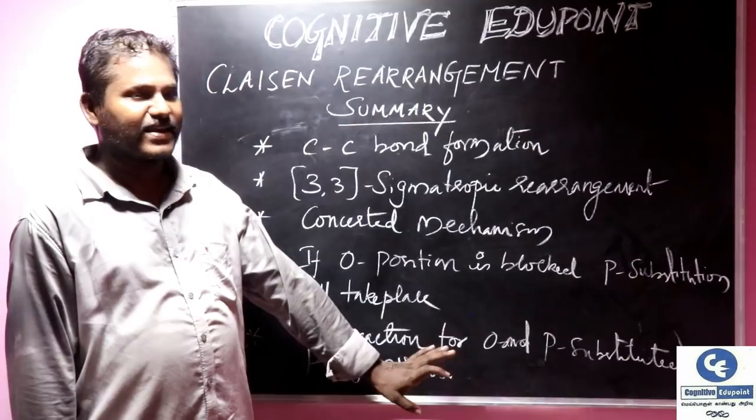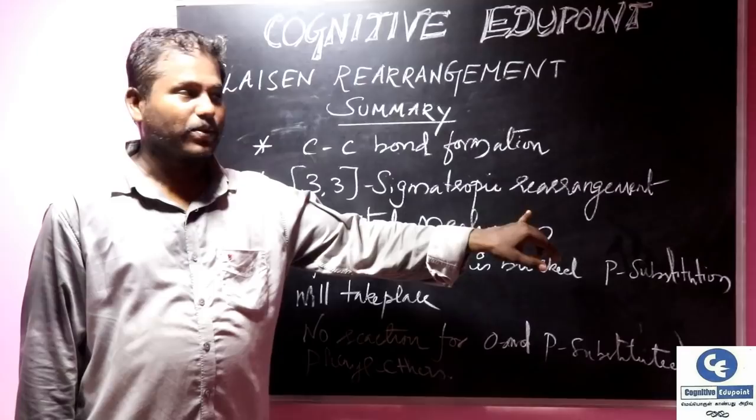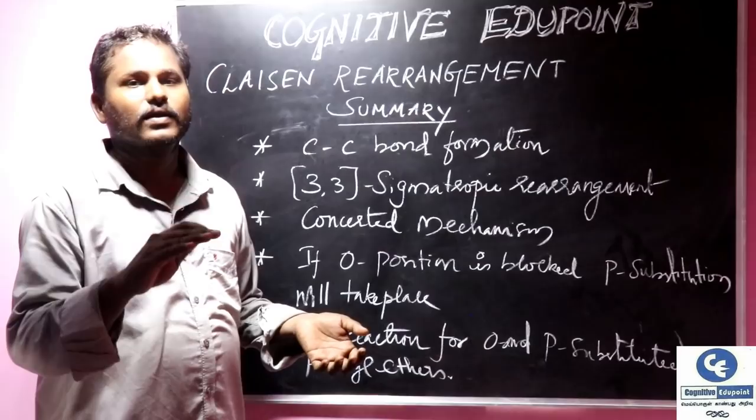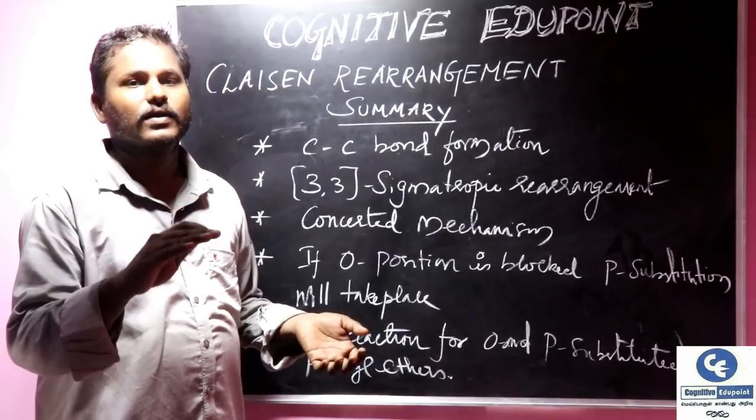In summary, Claisen's rearrangement is a carbon-carbon bond forming reaction. It is a [3,3]-sigmatropic rearrangement of allyl phenyl ethers or allyl vinyl ethers to corresponding ortho-allyl phenols or keto products. And it follows a concerted mechanism.